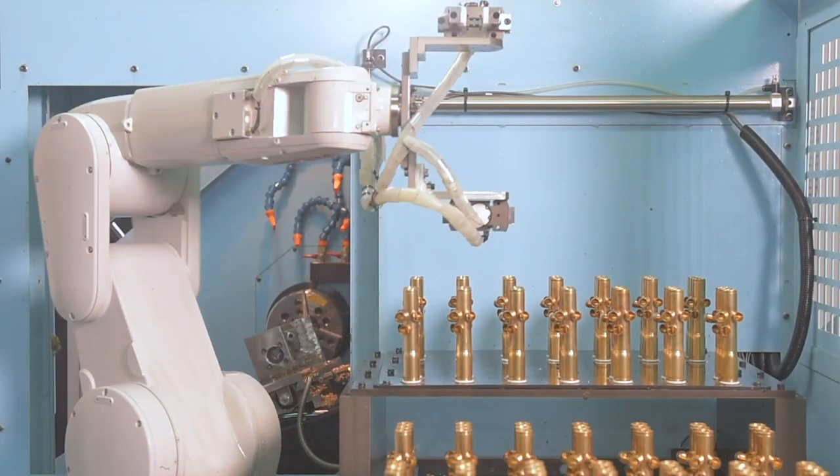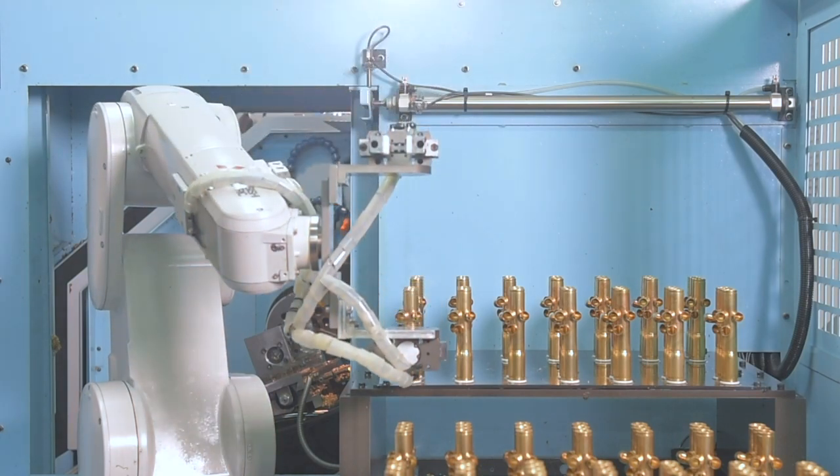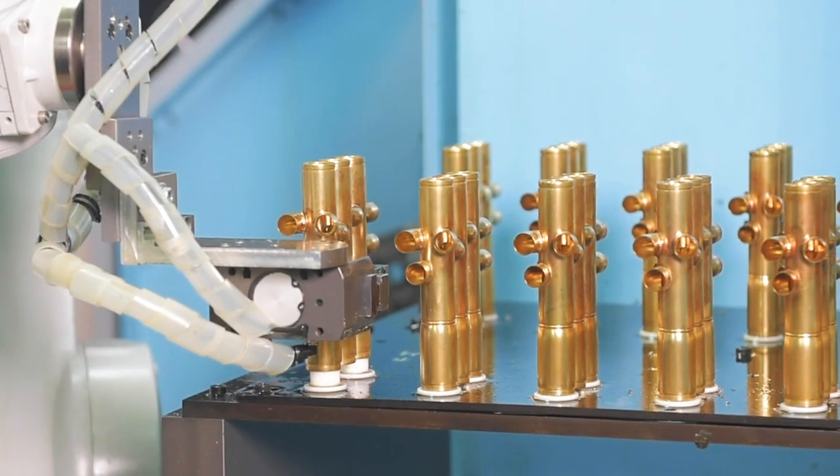Afterwards, the casings are sent to the automatic honing machines. With the assistance of robotics, the machines hone the inside of the valve casing tubes, ensuring each piston moves without resistance.